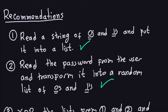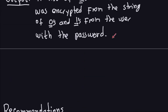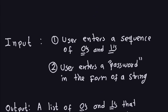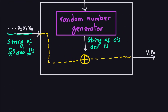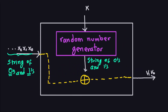Let me go back to the picture and see what we did already. So this is the stream cipher — we already did this part here. We asked the user to input zeros and ones and put it into a list. We also did the step where you take a password and transform it into a random sequence of zeros and ones. What is left is just this last part.